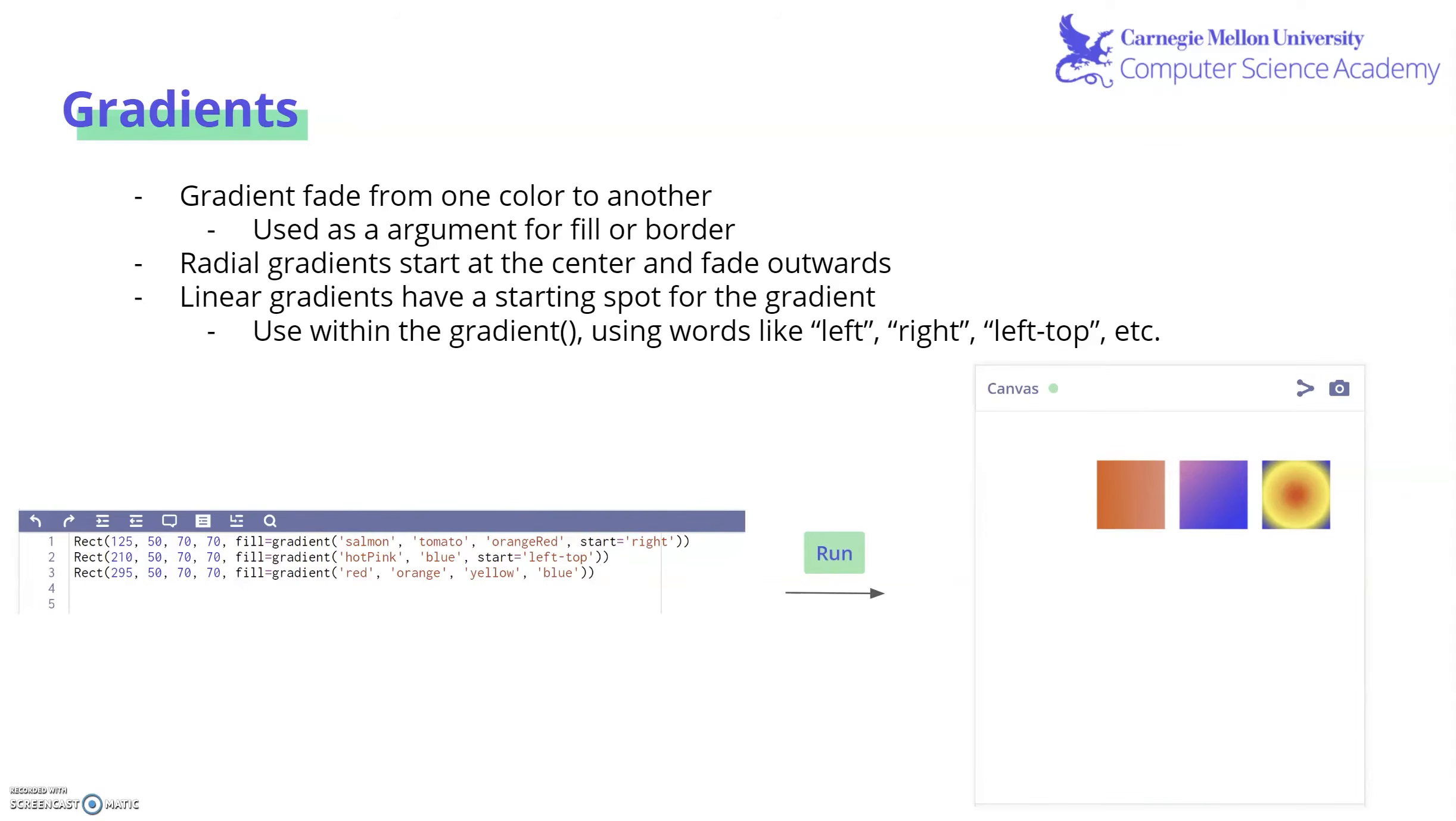With our fill, we can also create gradients, which is just fading from one color to another. This can be done by using it as an argument for fill or border. There are two kinds of gradients we can use: radial, which starts from the center and fades outwards, and linear, which need a starting spot for the gradient. It can be used by specifying words like left, right, left top, right bottom, etc.